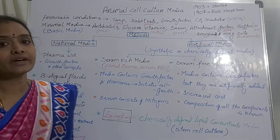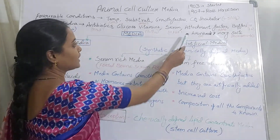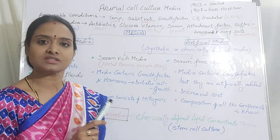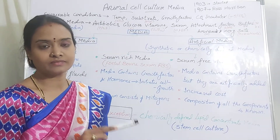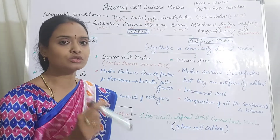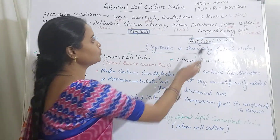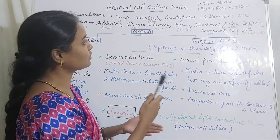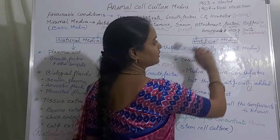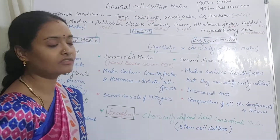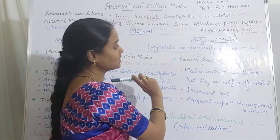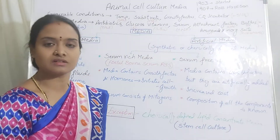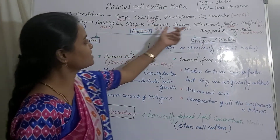Serum provides hormones and growth factors. Attachment factors: as mentioned, anchorage-dependent cells adhere to the substrate, but anchorage-independent cells lack anchorage proteins and cannot bind to the substrate. In that case, attachment factors such as a plasma clot are added so they adhere to the substrate. Buffers maintain the pH, mostly at 7.4. Amino acids act as a source of nitrogen, and inorganic salts provide all the micronutrients required for animal cells.